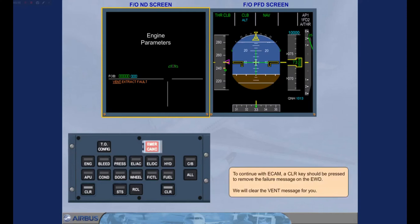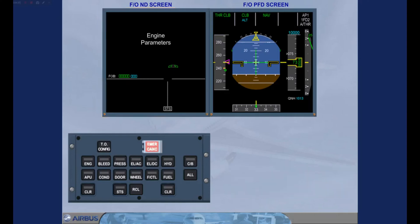To continue with E-CAM, a clear key should be pressed to remove the failure message on the engine warning display. We will clear the ventilation message for you. The status page would normally be displayed, but with only a single E-CAM screen available, the status page must be manually selected. Notice that there is a boxed status symbol on the engine warning display.